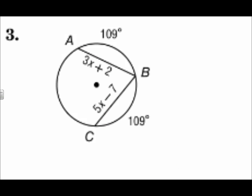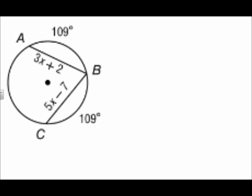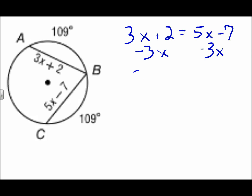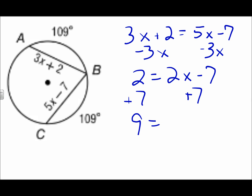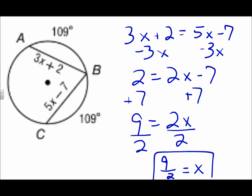On question 3, I have two congruent arcs that measure 109 degrees, which means that the chords that intercept those arcs are congruent. So I can make an equation where those equal each other: 3x plus 2 equals 5x minus 7. Solving for x — get the x's on one side by subtracting 3x from both sides, then add 7, and divide by 2 — so x is 9 halves, or 4.5. The chords were congruent because the arcs were congruent, so we can make their measures equal each other.